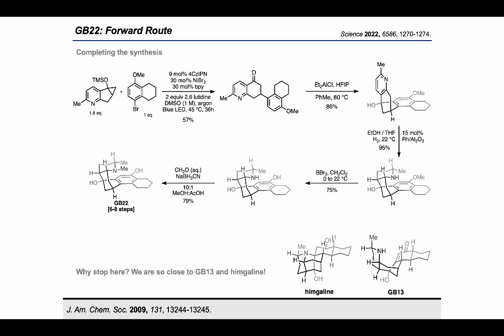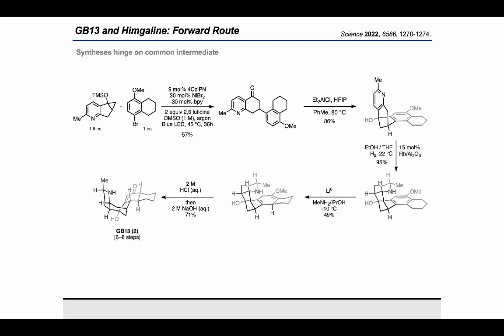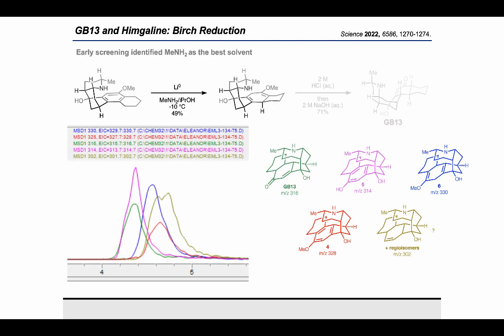We were kind of at a crossroads because we had accomplished everything that we had originally set out to do—we had accessed GB-22 and had developed a strategy for sp3–sp2 cross coupling of aryl bromides and siloxycyclopropanes. But at the same time we saw how close we were to GB-13 and hymgaline, and with encouragement from Ryan Shenvy and Megan Baker, we continued our journey into GB alkaloid chemical space. The route to GB-13 and hymgaline proceeds through the same pyridine hydrogenation product as that of GB-22. From this common intermediate we require a Birch reduction followed by hydrolysis to access GB-13, which is just one reduction away from hymgaline. Early screening by Megan Baker identified methylamine as the most proficient solvent, making this technically not a Birch reduction but a Benckiser reduction, as it uses an alkylamine as the solvent rather than ammonia.